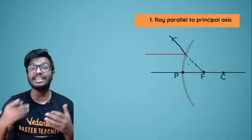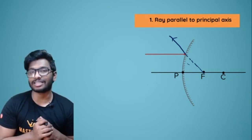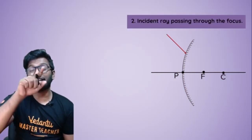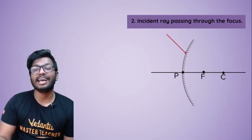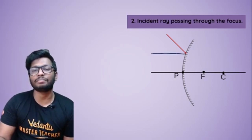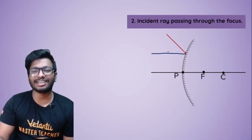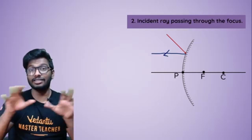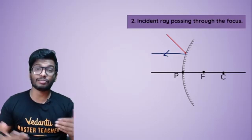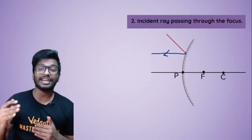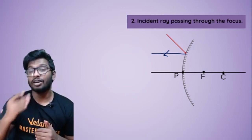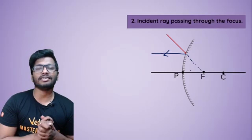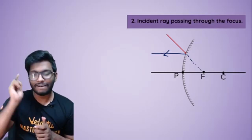When the ray of light is appearing to pass through the focus in a convex mirror, then after reflection it will be parallel to the principal axis. It is the same scenario for both concave and convex mirrors — if the ray of light is passing or appearing to pass through the focus, after reflection it goes parallel to the principal axis.